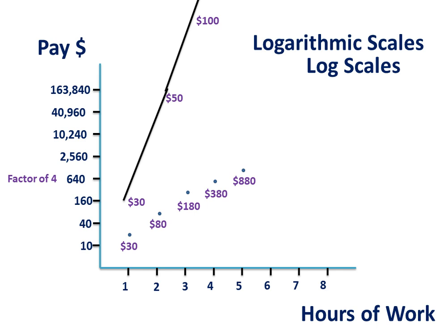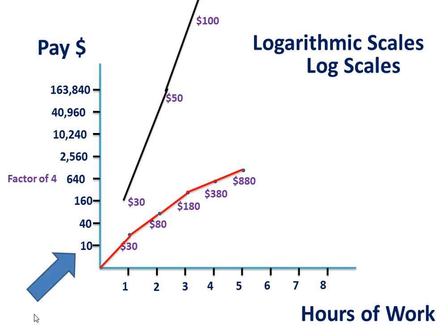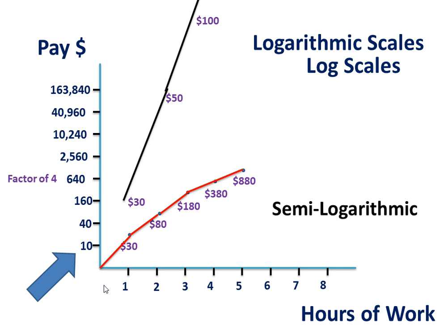This is exponential growth. And here we can see that when we use a logarithmic scale, we're very easily able to deal with this change in data. I want you to note that I only have a logarithmic scale along one axis — the other axis continues to use a linear scale. And for that reason we refer to this graph as semi-logarithmic, or a semi-log scale.